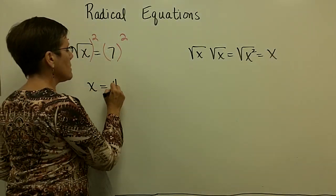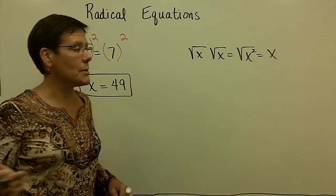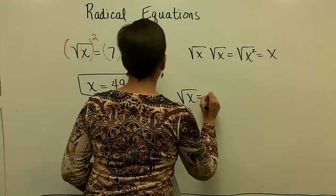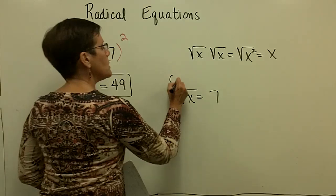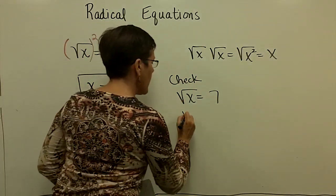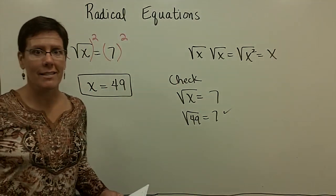On the right-hand side, 7 squared is 49, and I have my solution. I'm all done. x is equal to 49. My original problem read this. It said the square root of x is equal to 7. So you would take your answer and put it in for x and ask yourself if that is a true statement. And we get to say yes, it is.